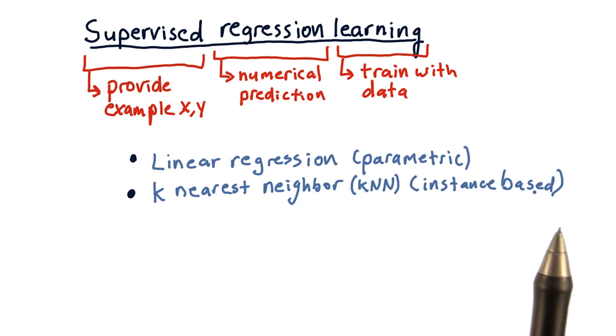Anyways, we'll spend a lot of time talking about KNN. Two other techniques that are really popular are decision trees and decision forests.